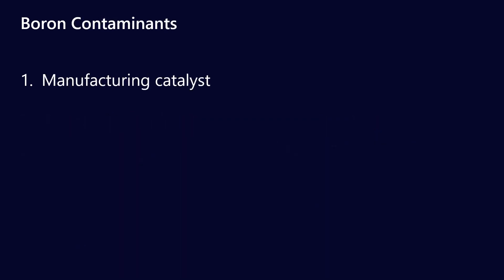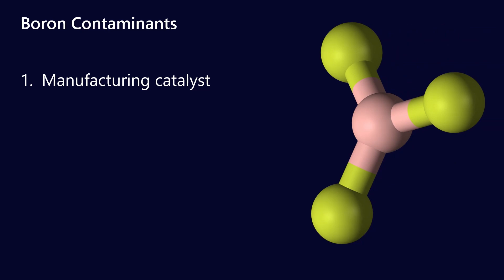Right, so that's the additives — now let's talk about the contaminants. Boron is used in a number of manufacturing catalysts. For example, boron trifluoride is used in the manufacture of some detergents, dispersants, and in the process of making polyalphaolefin base oils. It's very unlikely, but if any of the catalyst were to get into the finished product you could see some small levels of boron as a result.